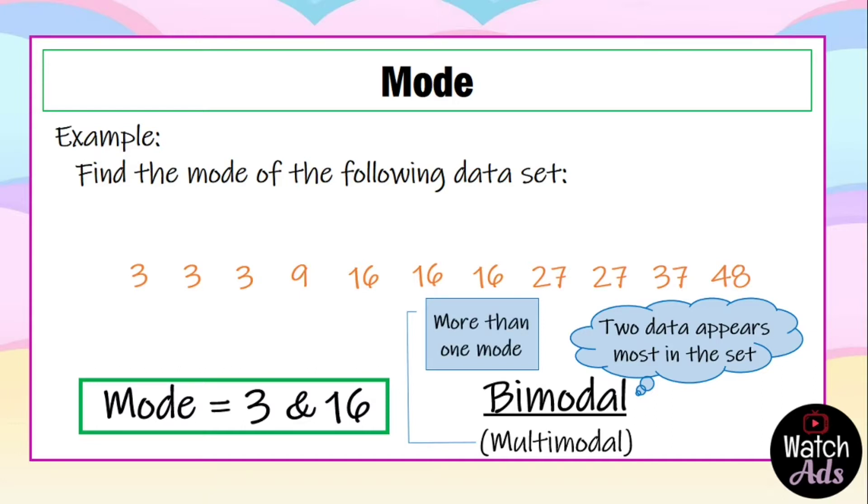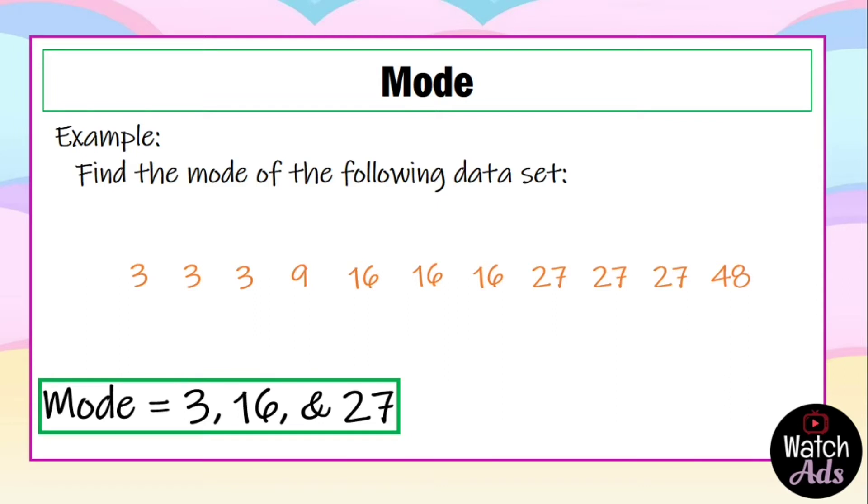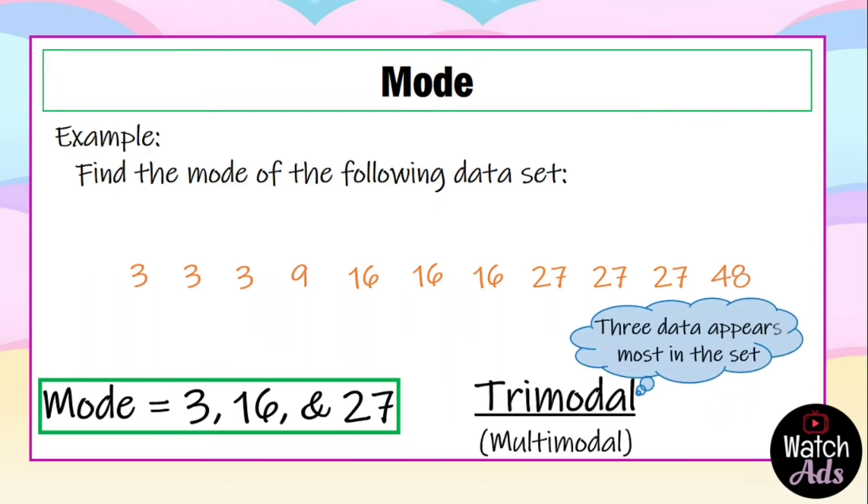Let's have another example: 3 appears 3 times, 9 appears once, 16 appears 3 times, 27 appears 3 times, and 48 appears once. Now we have three modes: 3, 16, and 27. This type of example is trimodal where 3 data appears most in the set, and also it is multimodal because we have more than one mode.